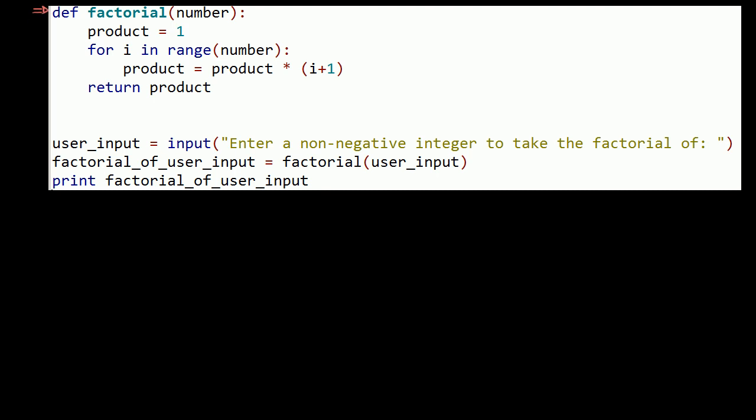So the interpreter will start at this first line over here, says, look, there's a function definition. We're defining the function factorial.